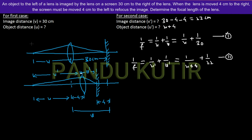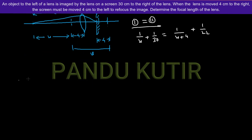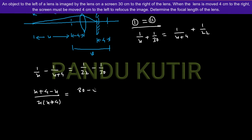Since we have the same lens, we can equate equation 1 and equation 2: 1/u + 1/30 = 1/(u+4) + 1/22. Rearranging: 1/u − 1/(u+4) = 1/22 − 1/30.